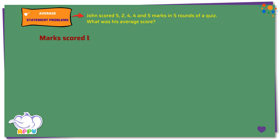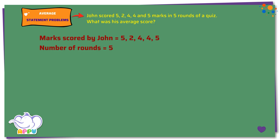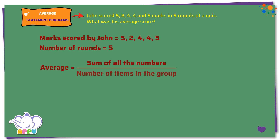Marks scored by John: 5, 2, 4, 4, 5. Number of rounds equals 5. We know that average equals sum of all the numbers by number of items in the group, which is equal to sum of all the scores by number of rounds.